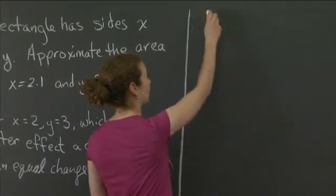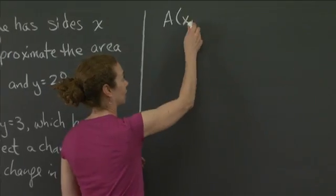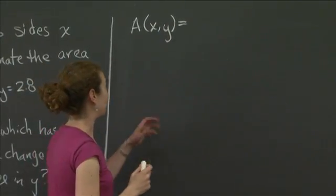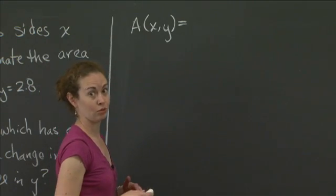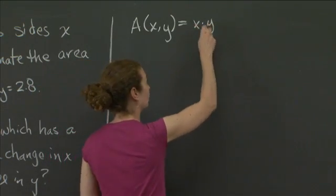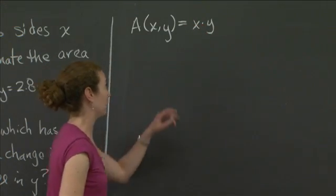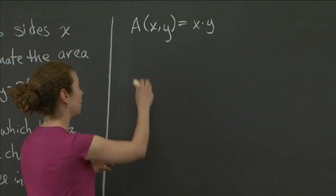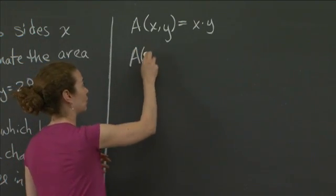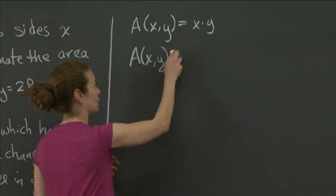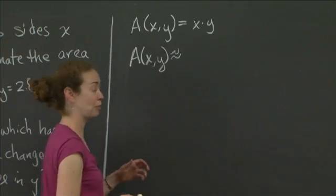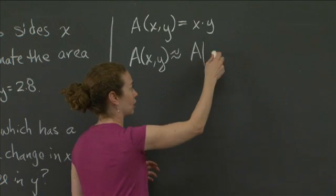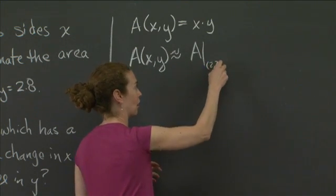First, we'll remind ourselves that in this case, what I'm going to approximate is the area function for a rectangle, which is A(x,y) is equal to x times y. So that's the function I'm going to be approximating. And now the actual approximation, the tangent plane approximation, has the following form. So we know A(x,y) is approximately the area evaluated at the point I'm interested in, which we said was 2 comma 3,